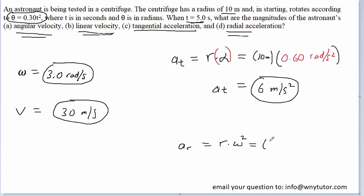Once again, the radius is 10 meters, so we can plug that in. And then omega, the angular velocity, was found earlier to be 3 radians per second. And we just don't want to forget to square that value.